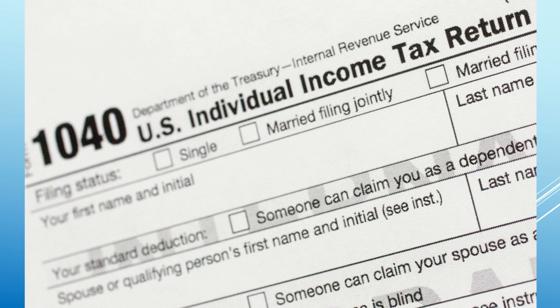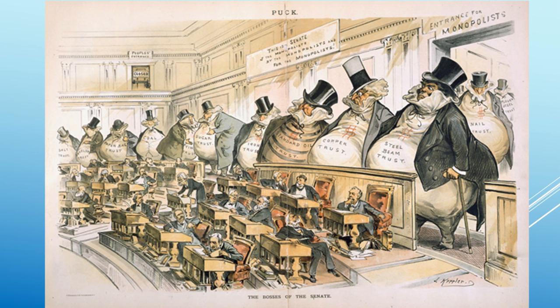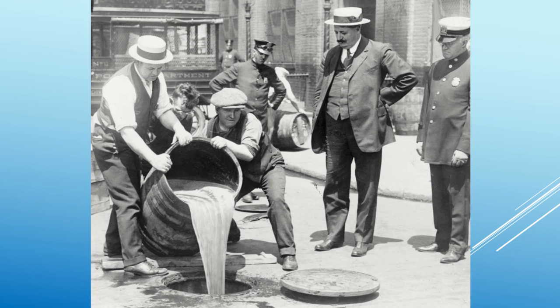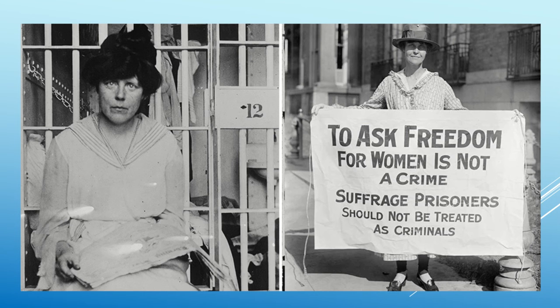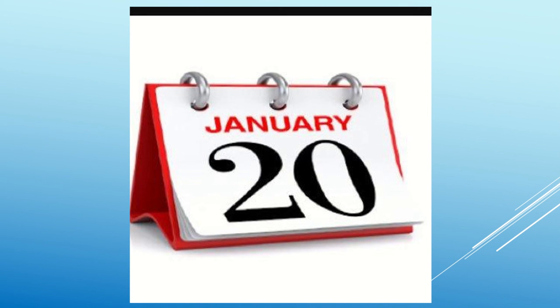The 16th Amendment authorized an income tax in 1913, after the Supreme Court had declared it unconstitutional in 1895. The 17th Amendment required the direct election of senators. The 18th Amendment prohibited the manufacture and sale of alcoholic beverages. The 19th Amendment extended the vote to women. The 20th Amendment reduced the time between the election and the actual inauguration — the time that officials assumed their office.